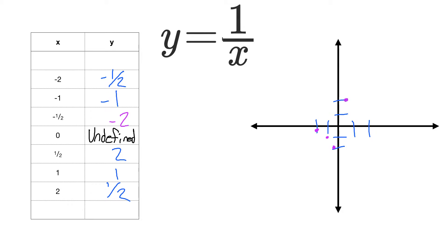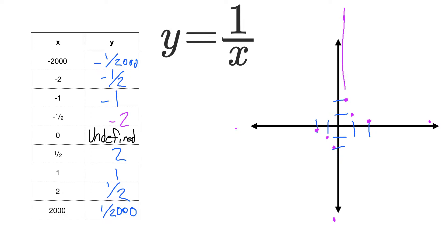As we go further out, if I put in negative 2,000, this becomes negative 1 over 2,000, which is almost 0. So as x goes further out into the negatives, y gets closer and closer to 0. Same going out to the positives — 1 over 2,000. And if I used 1 over 2,000 as my x value, y would go very significantly higher the closer we got to 0. Our final graph ends up looking like this.